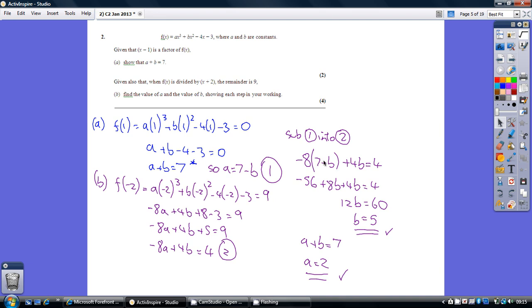So multiply out: negative eight times seven, negative eight times negative b. Multiply out, gather your terms, and we get b equals five.